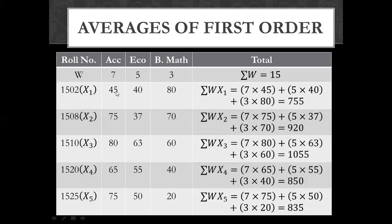For student 1 (x1): 7×45 + 5×40 + 3×80 = 755. For student 2: 7×75 + 5×37 + 3×70. For student 3: 7×80 + 5×63 + 3×60. For student 4 (x4): 7×65 + 5×55 + 3×40 = 850. For student 5 (x5): 7×75 + 5×50 + 3×20 = 835.